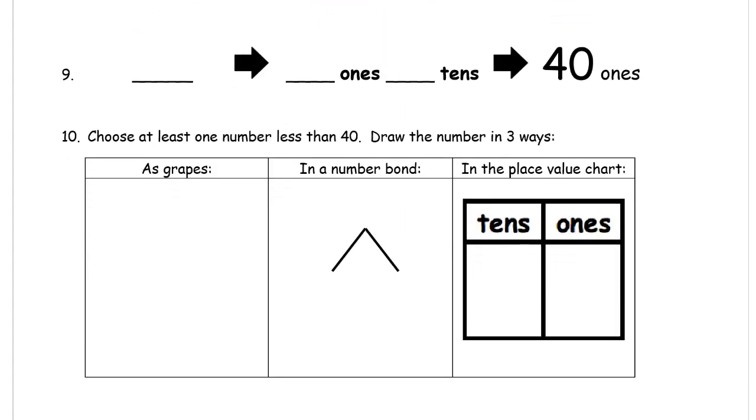And then here we have 40 ones. So we know the regular way is just the number 40. And this is how many ones, how many tens. Well, you could do this a lot of different ways, really, if you think of it. We could call it four tens and zero ones. Or you could have it as three tens and ten ones. That would work too. Or two tens and twenty ones. That would also work. There's a lot of right answers that could work there.